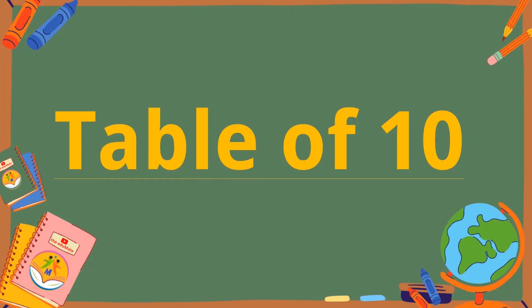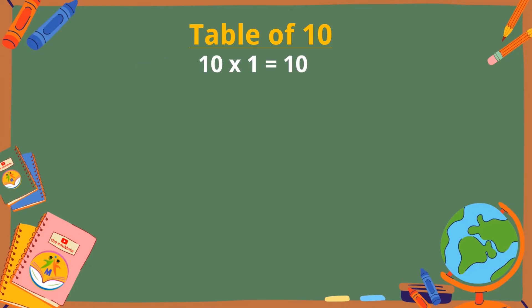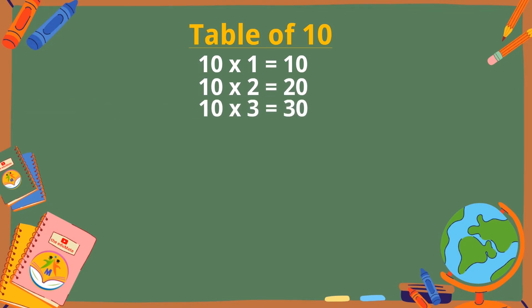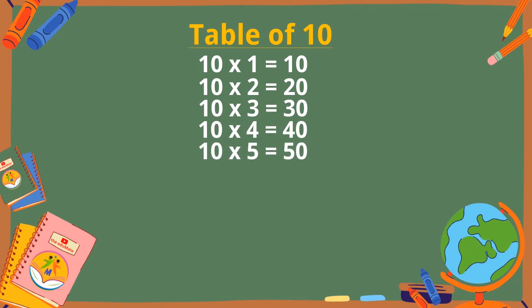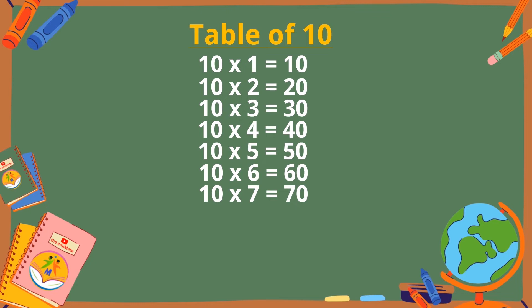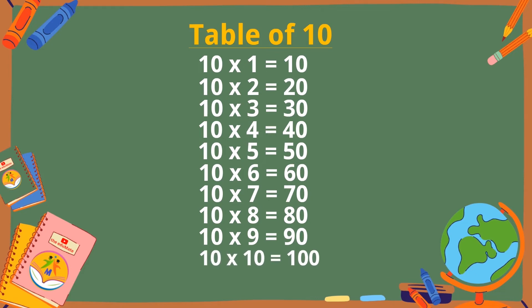Table of 10. 10×1 is 10, 10×2 is 20, 10×3 is 30, 10×4 is 40, 10×5 is 50, 10×6 is 60, 10×7 is 70, 10×8 is 80, 10×9 is 90, 10×10 is 100.